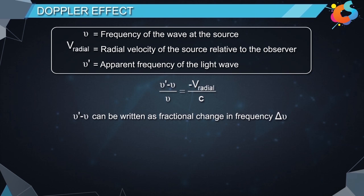Here, ν' - ν can be written as fractional change in the frequency, that is Δν. Therefore, the equation becomes Δν/ν = -v_radial/c, which is equal to Δλ/λ.